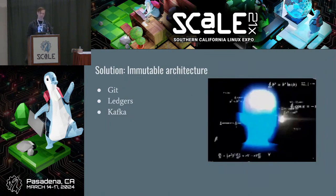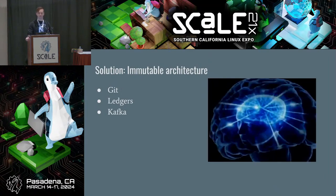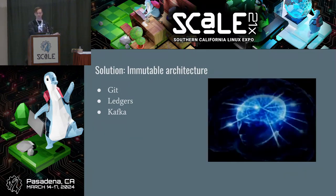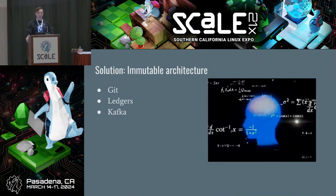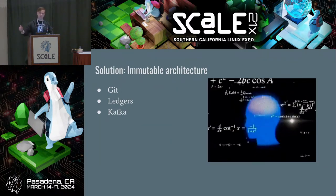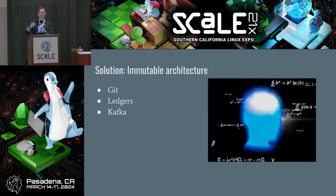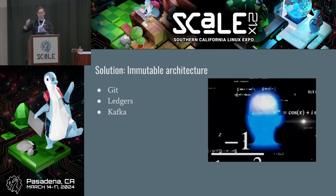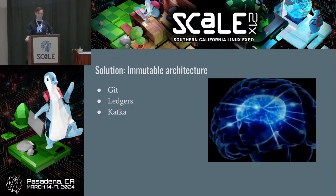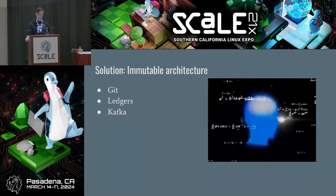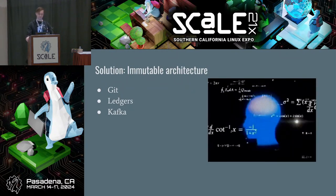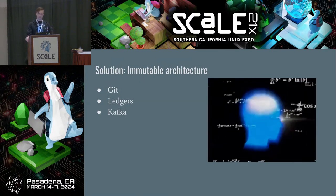The bigger idea here is immutable architecture. This isn't unique to payments, although you will see it in traditional ledgers — paper ledgers, blockchain ledgers, same idea. Git is an example of immutable architecture: the changes you make to your code are actually diffs and patches applied one after the next. Unless you do some crazy rebasing, Git is immutable. Kafka is another example — it's an append-only log for event streaming.